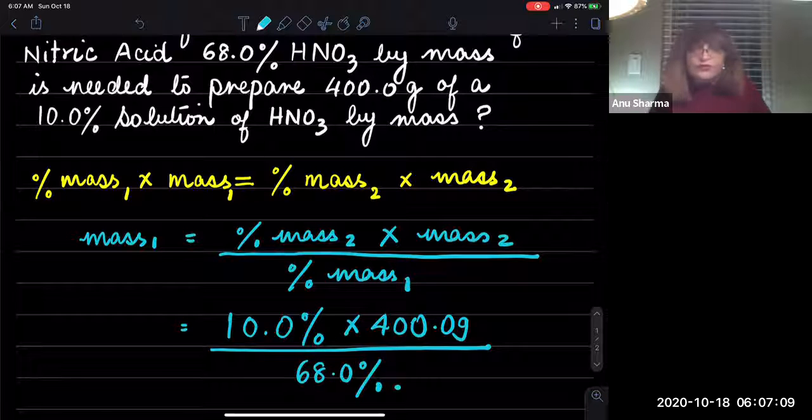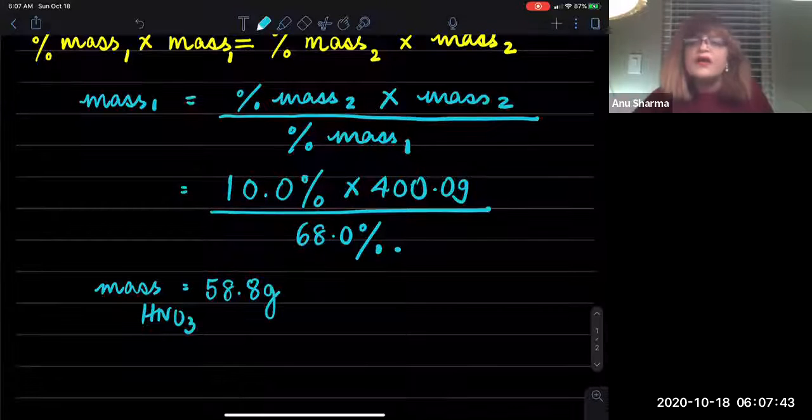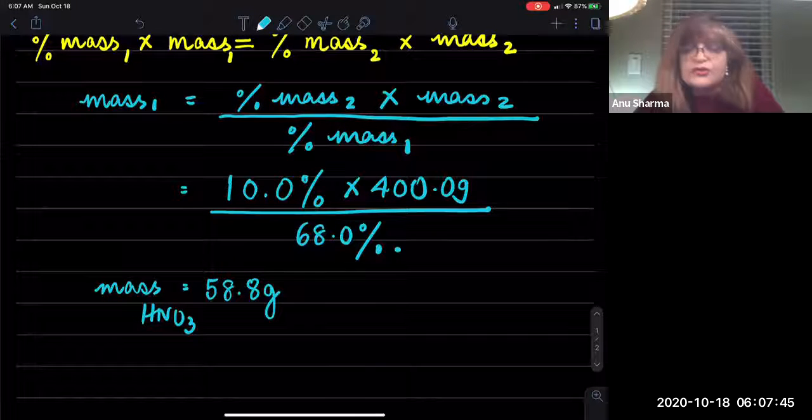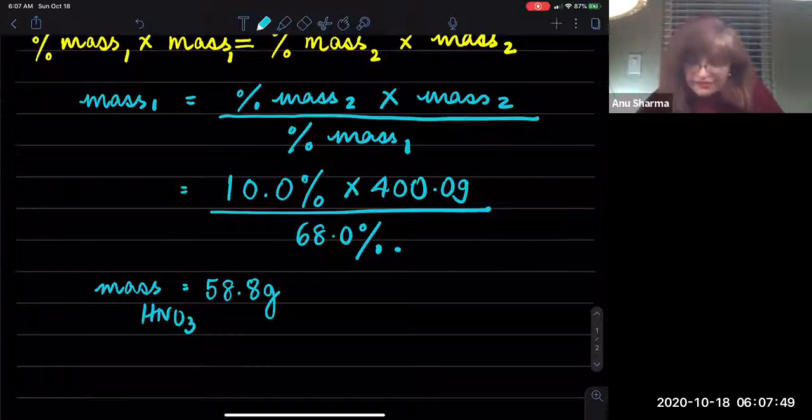Okay, so when you do the math you are going to get 58.8 grams of HNO₃.